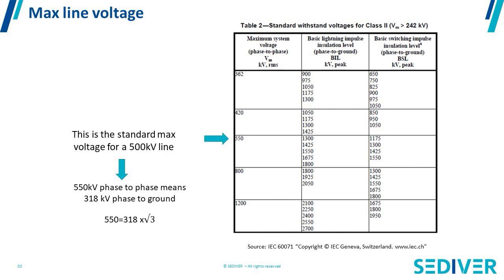The switching is always lower than the lightning impulse. When we talk about a 500 kV line — which is in fact a 550 kV line — we are talking about the phase-to-phase voltage between two conductors. On an AC line with three conductors, you have 550 kV between two conductors. But if you divide 550 kV by the square root of three, you get 318 kV, which is the phase-to-ground value. So between phases you have 500 kV, but between conductor and ground you have approximately 300 kV. The insulator string insulates the phase-to-ground value, not phase-to-phase.